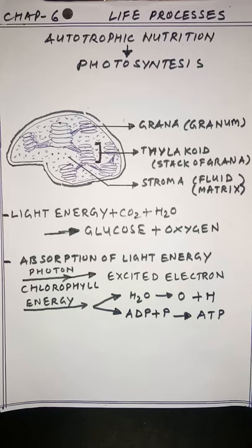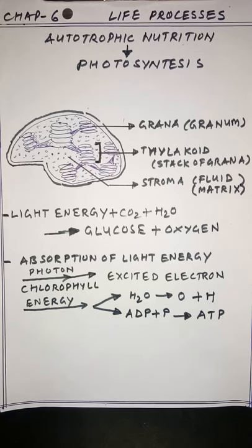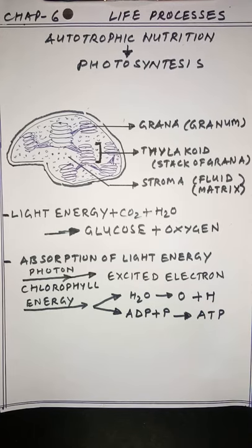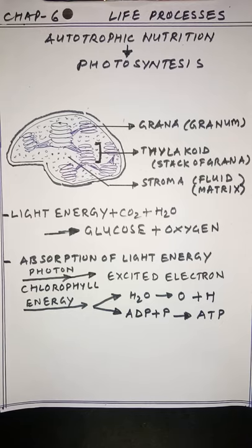The key component for photosynthesis is the chloroplast. Plastids are of three types: chloroplast, chromoplast, and leucoplast. Chloroplasts are green due to the pigment chlorophyll, which drives photosynthesis. Chromoplasts and leucoplasts provide different colors to flowers and leaves, and one component of plastids is responsible for energy storage.